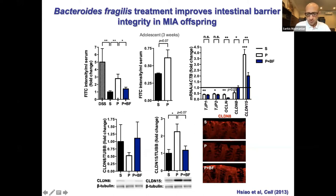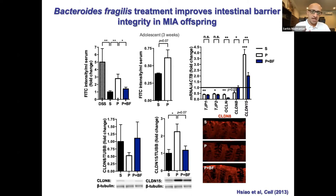Several years ago when we were doing this work with Paul, we identified this leaky gut phenotype in the MIA mouse model. This is shown through a FITC-dextran experiment where we give a fluorescent dye orally to animals — the dye is coupled to a large sugar polymer which doesn't easily cross the intestinal epithelium — and then we measure fluorescence in the bloodstream. An increase in bloodstream fluorescence marks increased leakiness.